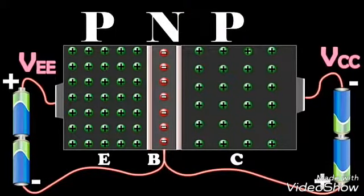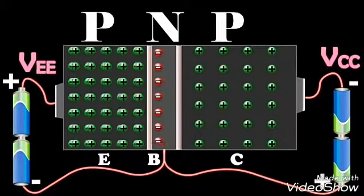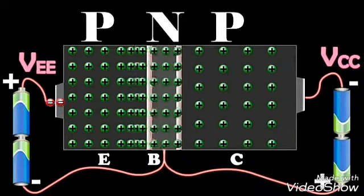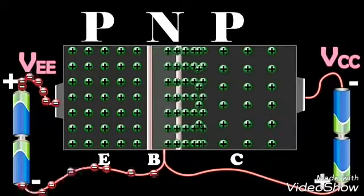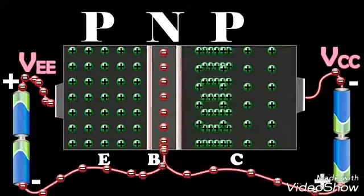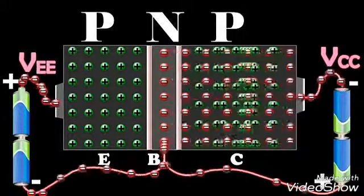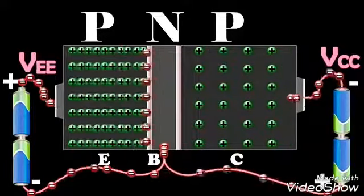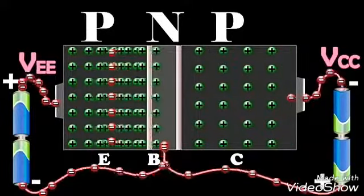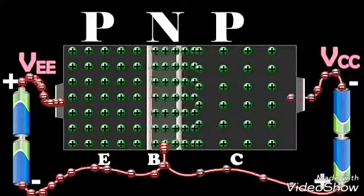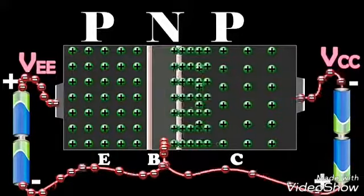Since the emitter-base junction is forward biased, a large number of holes cross the junction and enter the base. At the same time, very few electrons flow from the base to the emitter. These electrons, when they reach the emitter, recombine with an equal number of holes in the emitter.